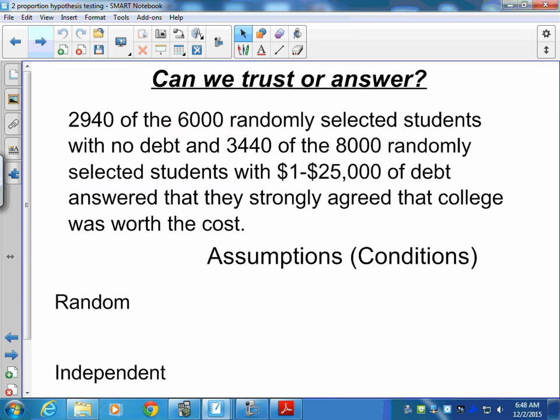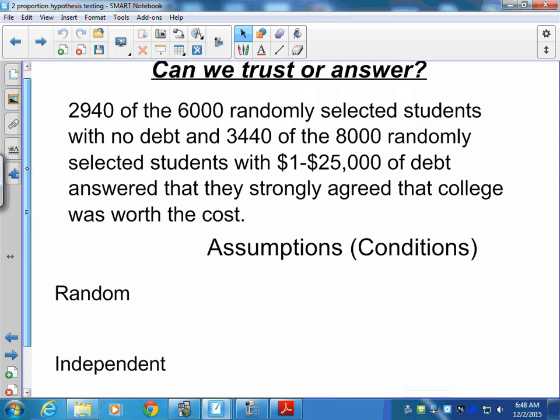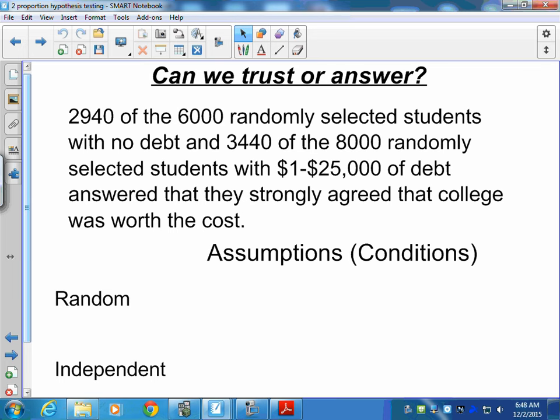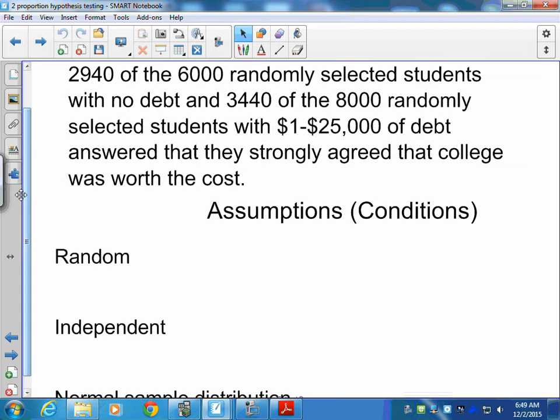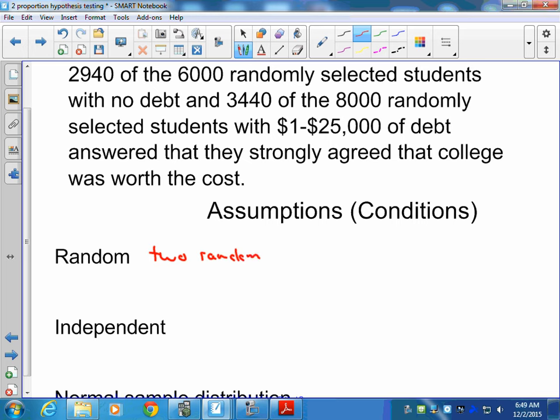Once again, we're back to the assumptions piece. We always have to test and verify our assumptions in the situation. We have 2,940 of the 6,000 randomly selected students with no debt and 3,440 of the 8,000 randomly selected students with $1 to $25,000 of debt answered that they strongly agreed that college was worth the cost. When we're looking at our assumptions, first thing we want to do is look at is it a random sample? So we have two random samples stated in problem.